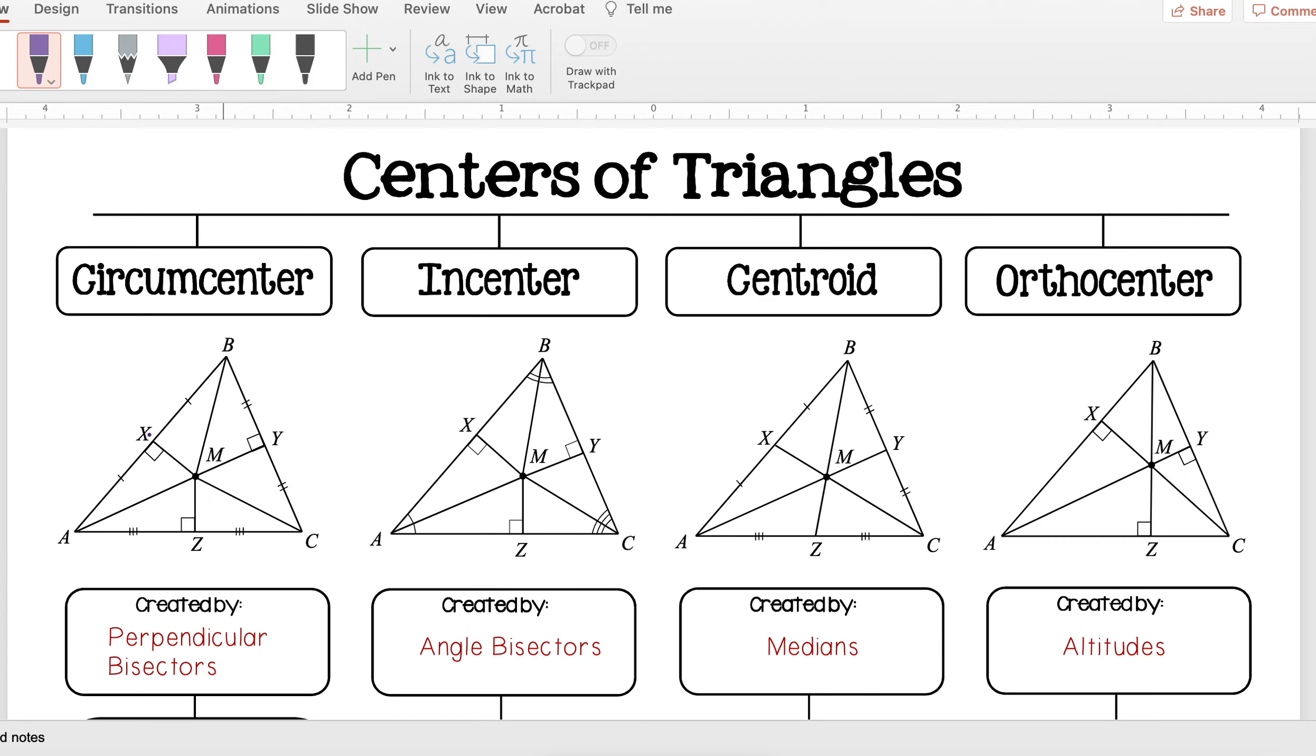My incenter is created by angle bisectors, so it is the point where all of my angle bisectors from my vertices intersect. And then centroid, that's what we talked about today, and that is where all my medians intersect. Remember, a median was going from a vertex, a segment from my vertex to the opposite side's midpoint.